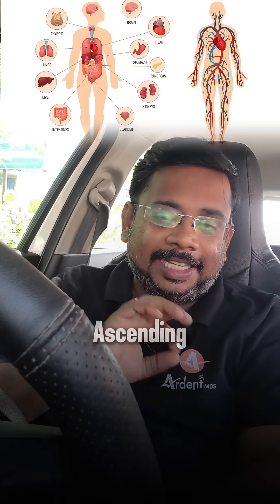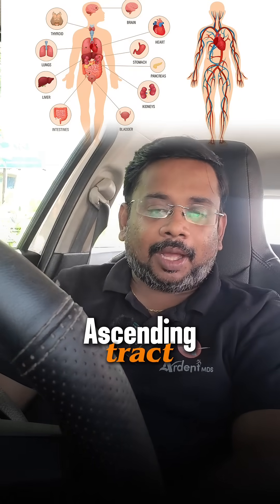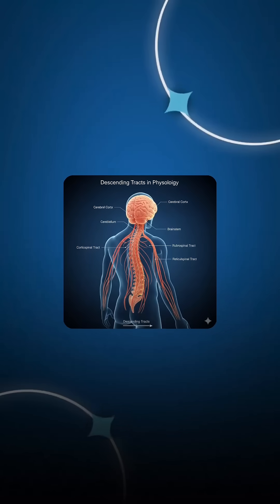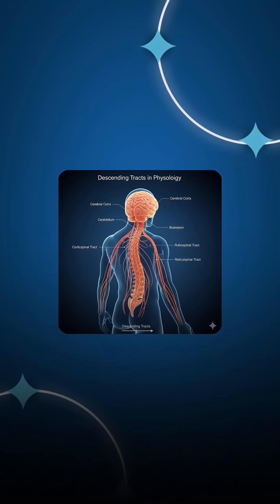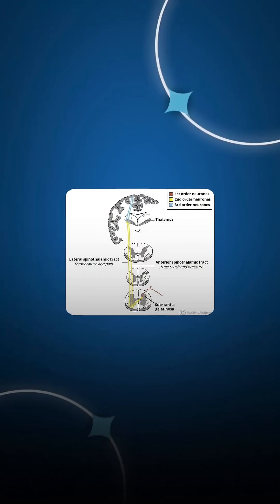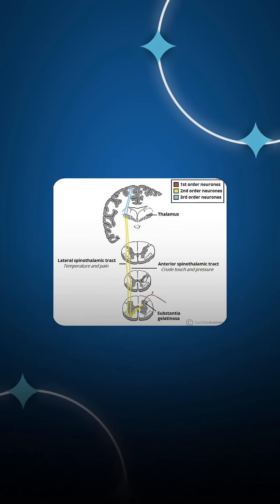Students, I need to talk about Ascending Tracks. There are two types of tracks: one is Descending Tracks and two is Ascending Tracks. Descending Tracks are usually in the brain or peripheral organs — usually this is motor. Sensory is Ascending Tracks, so Ascending Tracks are very important.